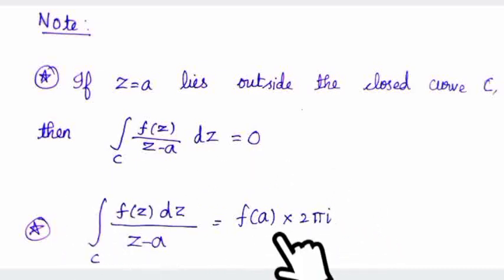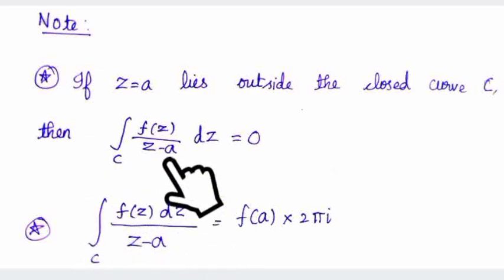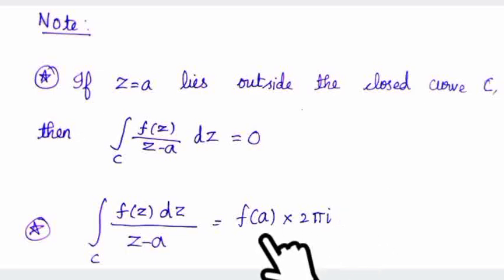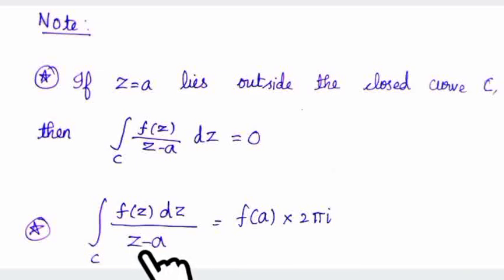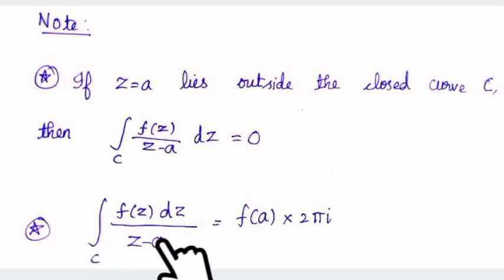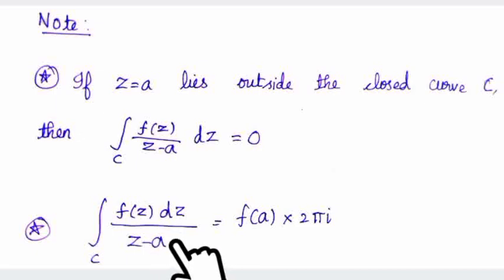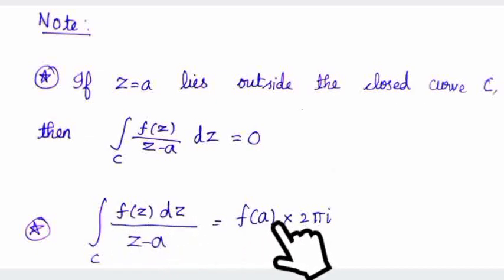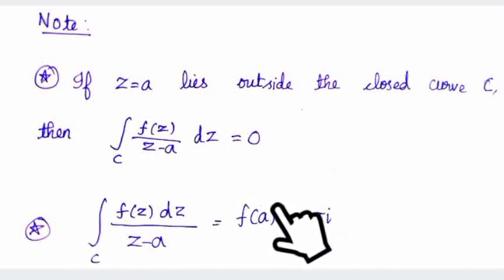From the Cauchy Integral Formula, we get f(a) · 2πi as the value of the integral. If the numerator function's point lies at z = a, the formula applies. When the point is outside, the integral value is 0. When inside, the integral equals 2πi · f(a).